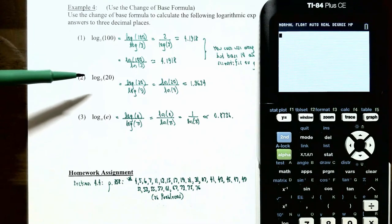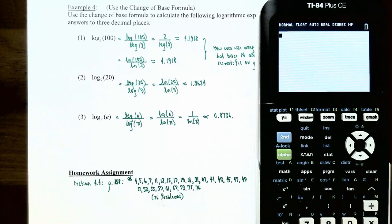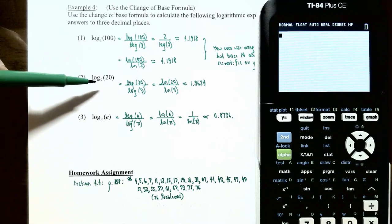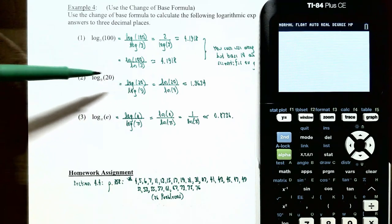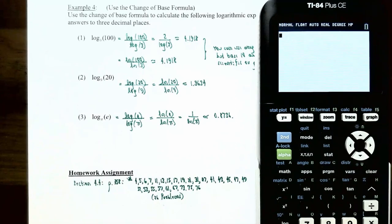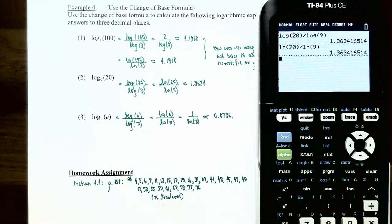Number two: evaluate log base 9 of 20. The answer should be between 1 and 2 since 9¹ = 9 and 9² = 81, and 20 is between them. Using the change of base formula with base 10: log of 20 divided by log of 9, which is approximately 1.3634, or 1.363 rounded to three decimal places. Using natural logarithm instead: natural log of 20 divided by natural log of 9 gives the same result, approximately 1.363.